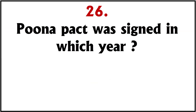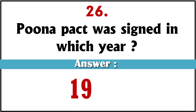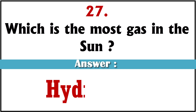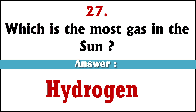The Poona Pact was signed in which year? 1932. Which is the most abundant gas in the sun? Hydrogen.